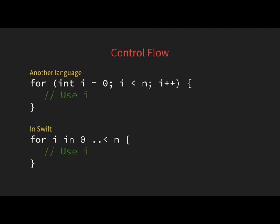Let's talk about control flow. In other languages you might write a for loop with an initializer, a condition, and an increment — which is a bit messy. In Swift we do something closer to what we mean: 'for i in 0..<n'. You can read this as 'for i in the range from zero up to n, exclusive'. That's the Swift for loop syntax.